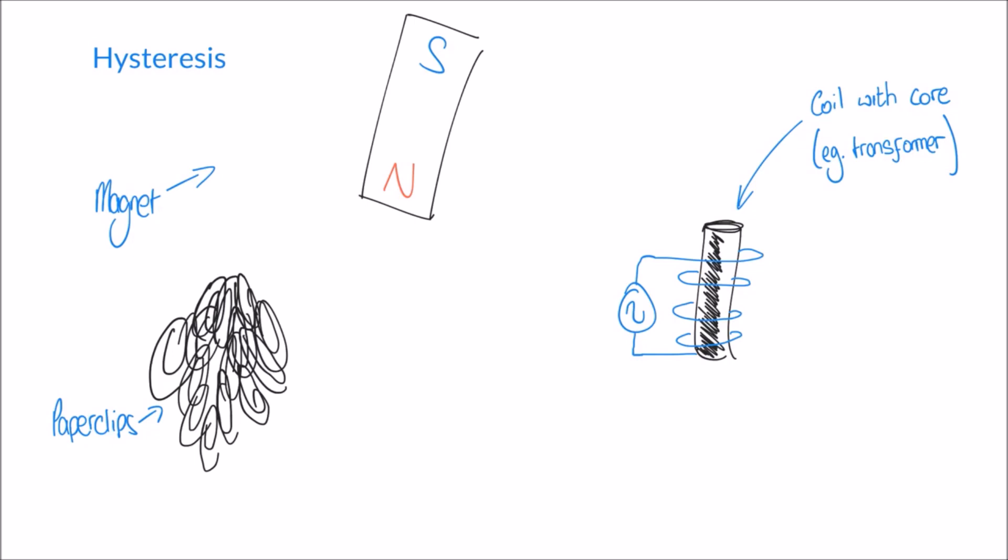The problem here is that the iron core has already been magnetized in one direction. So if the current changes direction, the magnetic field changes direction, the iron core has already been magnetized in the original direction. And it's very difficult to change its direction, because it kind of wants to remain magnetized, just like my paper clips here. We'll look at this more later on in a different topic. But in this video, we're going to look at the principles of hysteresis, and how we can represent it using a graph.